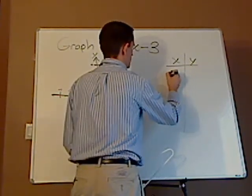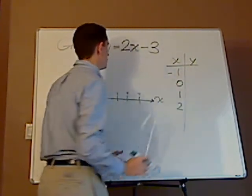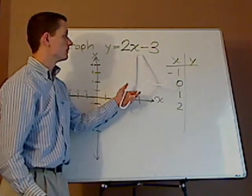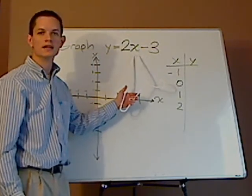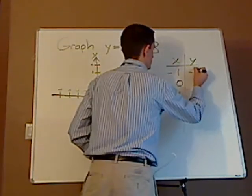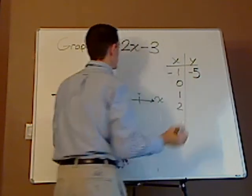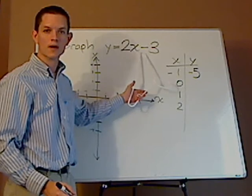If I plug in negative one, two times negative one is negative two, minus three gives me negative five. I plug in zero, two times zero is zero, minus three is negative three.